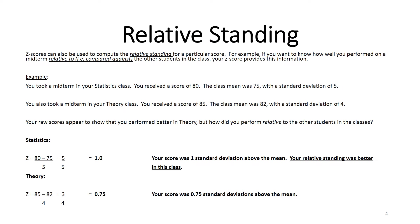Z-scores can also be used to understand the concept of relative standing. Z-scores can be used to compute the relative standing for a particular score. For example, if you want to know how well you performed on a midterm relative to the other students in the class, your z-score provides this information. Many of you may have recalled standardized testing where you were told you were in the 86th percentile — that's what we're doing here with z-scores and relative standing.